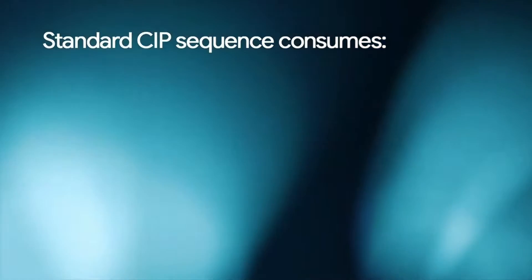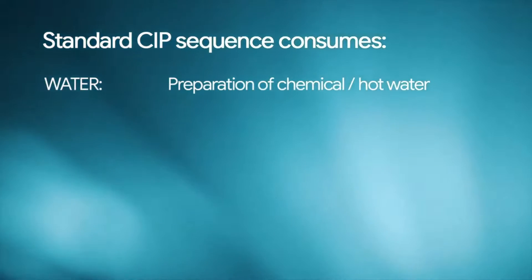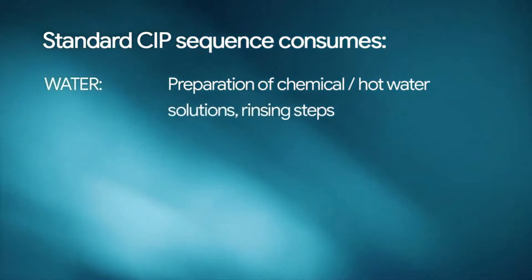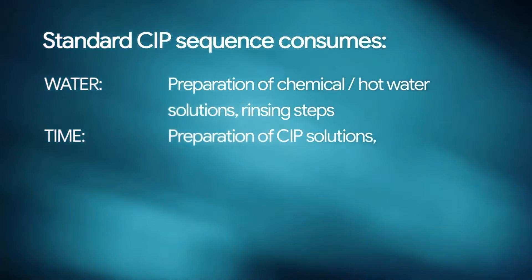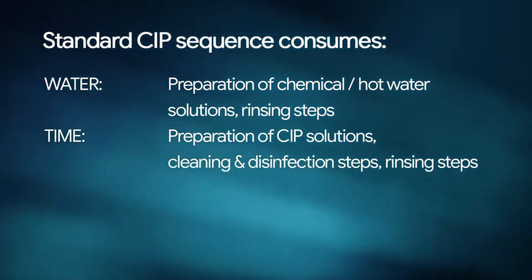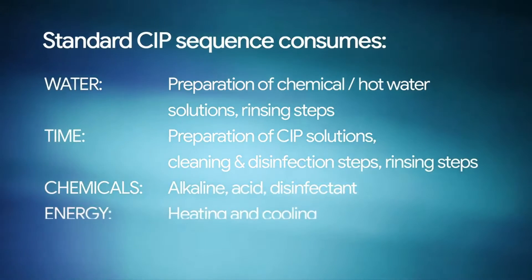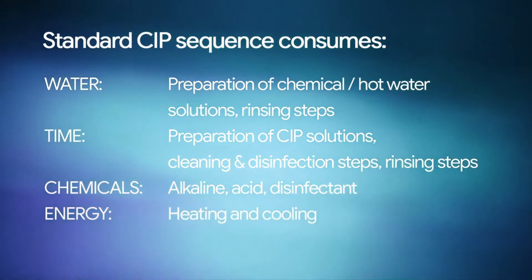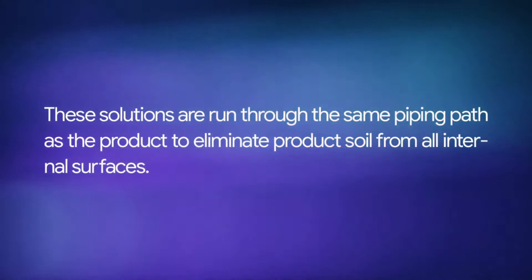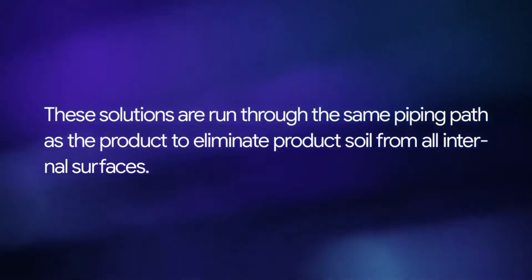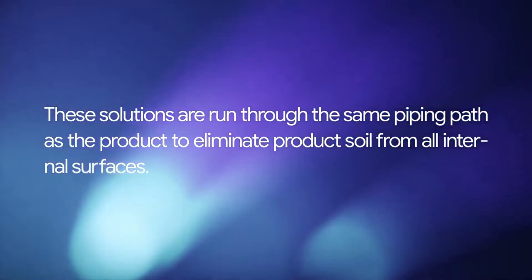The standard CIP sequence consumes water through the preparation of chemical or hot water solutions, followed by rinsing steps. Cleaning and disinfection steps use chemicals — alkaline, acid, and disinfectant — along with energy for heating and cooling. These solutions are run through the same piping path as the product to eliminate product soil from all internal surfaces.